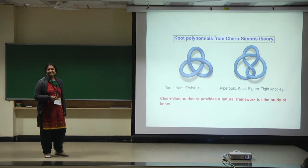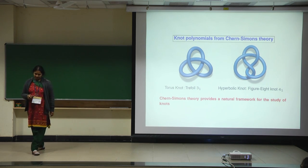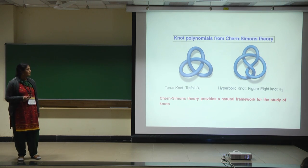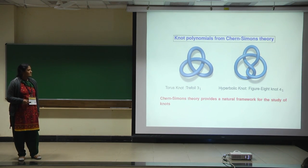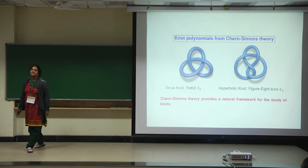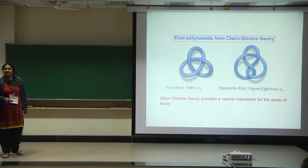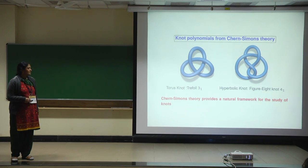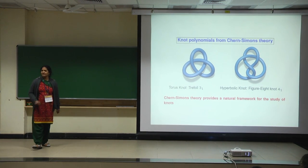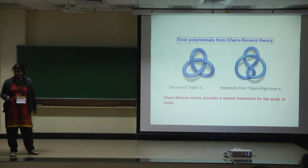Just like periodic tables of atoms, there is a beautiful knot table by Thistlewaite and Rolfsen. You go to the knot atlas and pull down all these knot diagrams. This is the three-crossing, then four-crossing, and so on — you can keep going. I would call it the periodic table of knots. Chern-Simons theory seems to give us a good framework to study such knots in three dimensions, even though in the knot atlas it is depicted as a tube — it is actually a line.